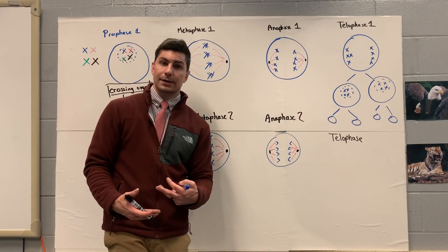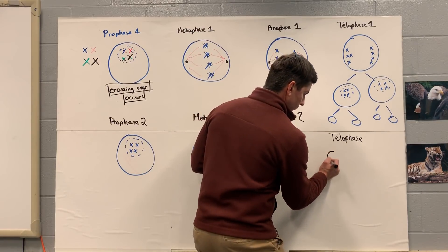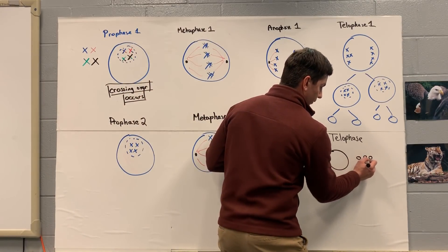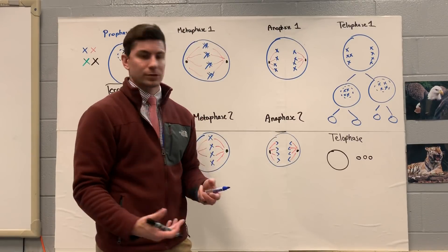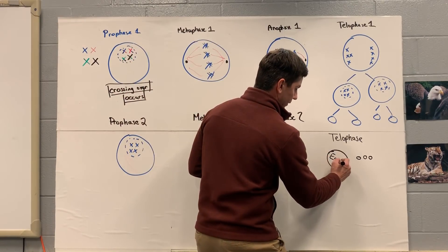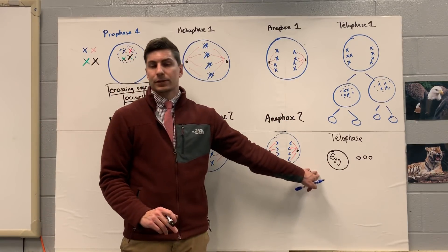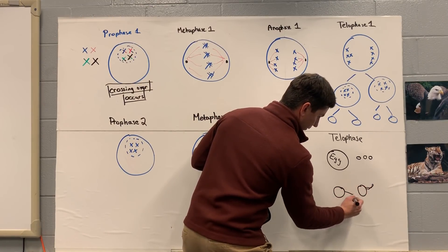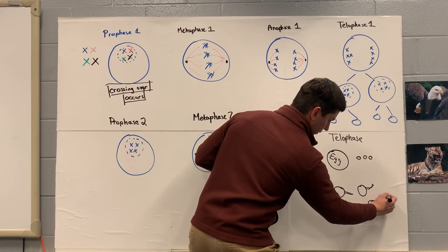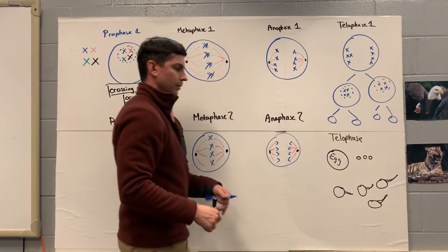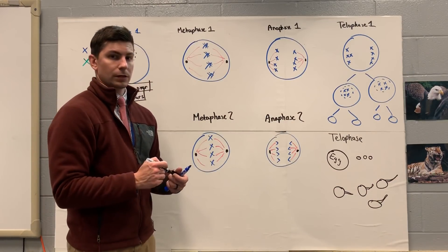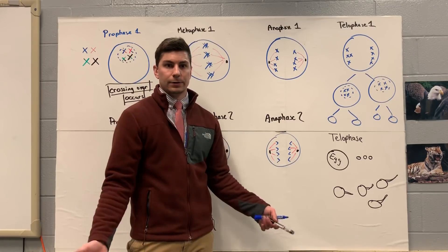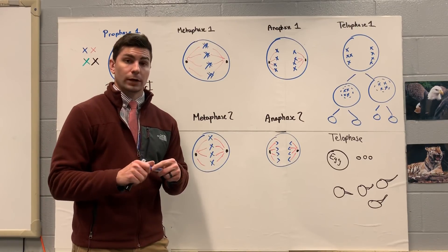At the end, going into telophase two and cytokinesis two, we are now going to have four cells - and all these cells are going to be haploid with 23 chromosomes. For women, they're going to have one very large cell, which is the egg, and then three polar bodies that are essentially very small cells - pretty much all the cytoplasm and everything goes to the egg cell. For men, they're going to have four sperm, all the same size, because men produce a lot more sperm compared to women's eggs. We don't want women to produce more than one egg at a time, because if all those eggs get fertilized, she'd be pregnant with a lot of babies.